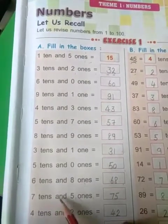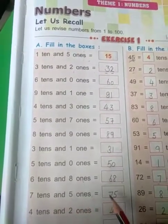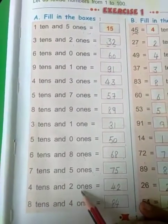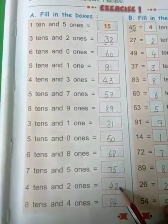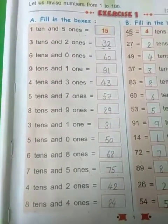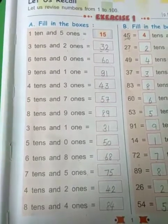7 tens and 5 ones is 75. 4 tens and 2 ones is 42. 8 tens and 4 ones is 84.